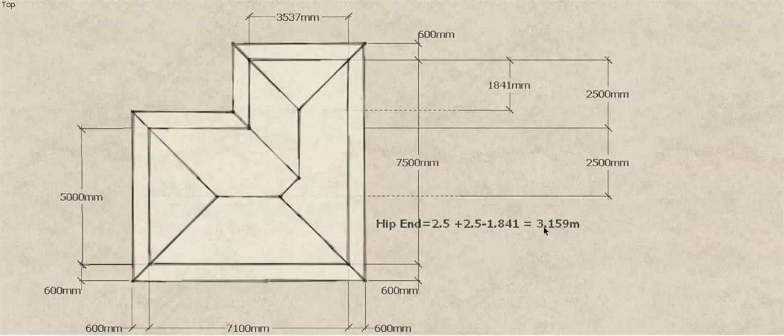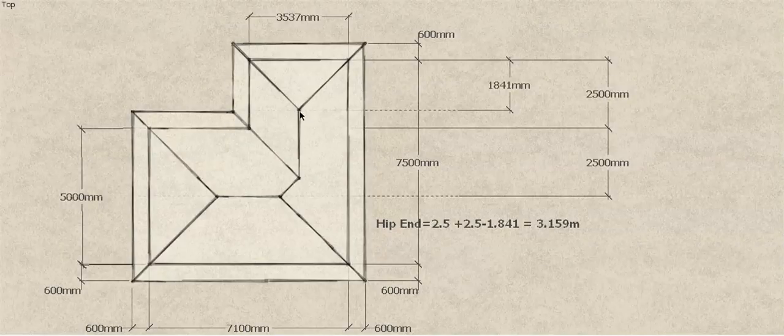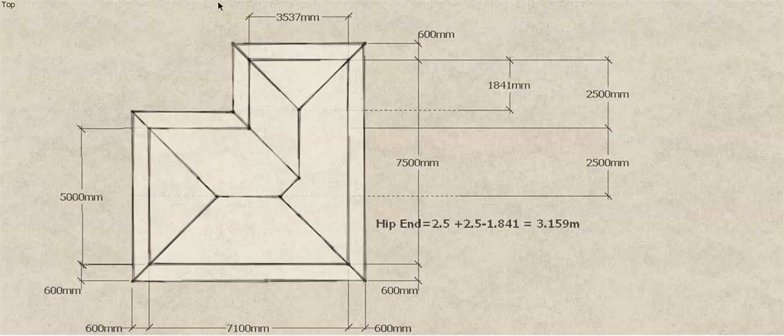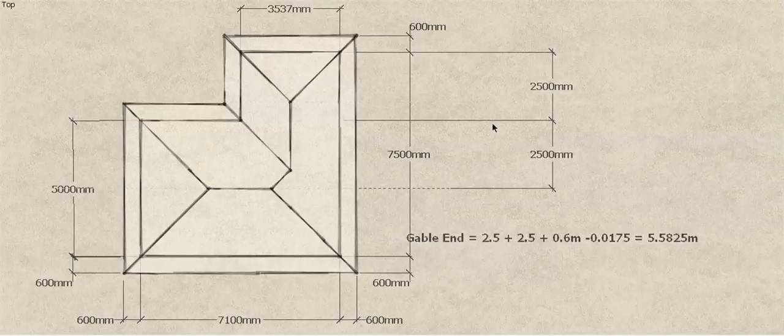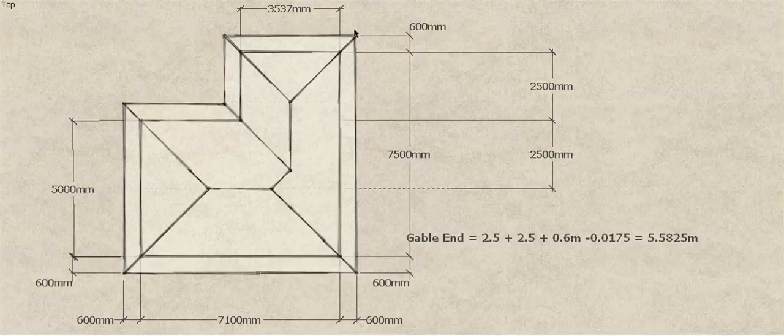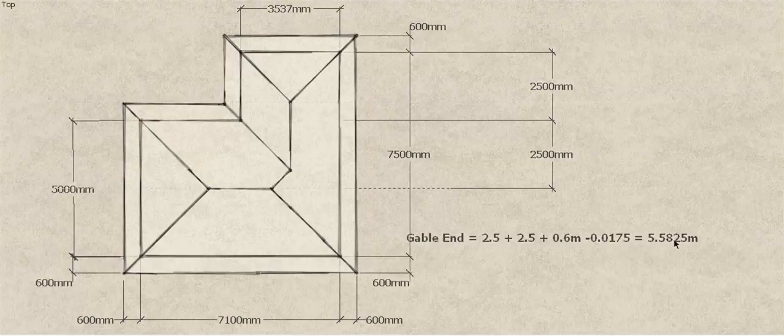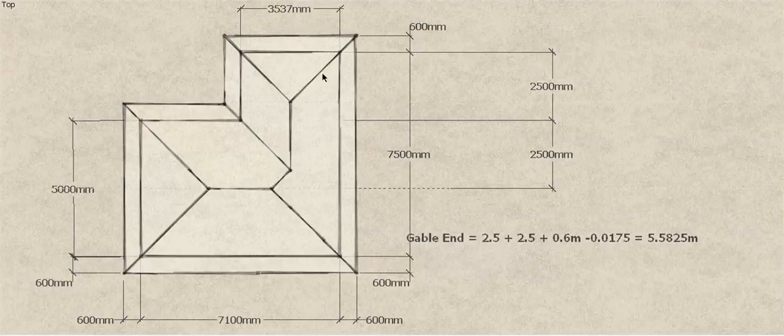Now if we were going to have a gable roof or gable end, same situation. The calculation would just be the half span of the major roof plus the length of this extension plus the overhang. So it would actually end up with a ridge length of 5.582.5. So that's for a gable end if the gable went right out to the end of this building - we don't worry about the hips.